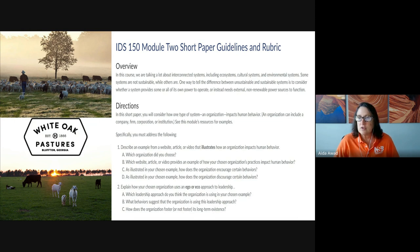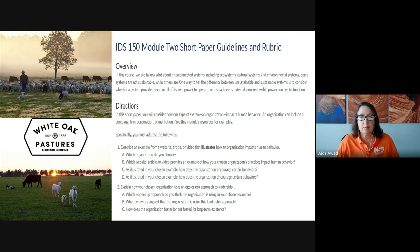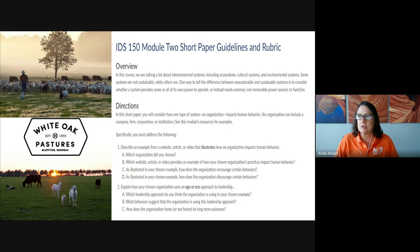First, you're going to identify an organization to focus on. You'll want to pick one where you can identify the impacts the organization's practices have on human behavior. Then, after describing the impacts it has on human behavior, you'll identify the behaviors it encourages and discourages by explaining how the organization accomplishes it.